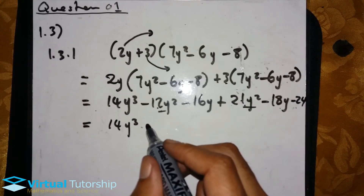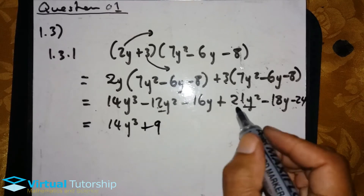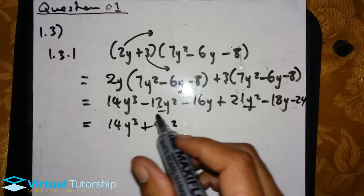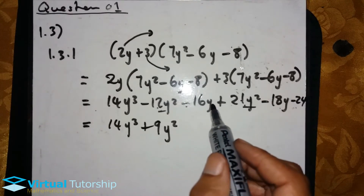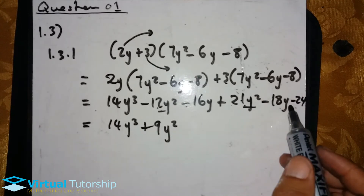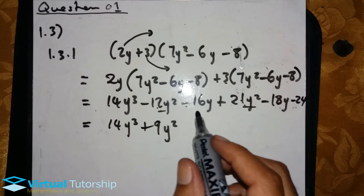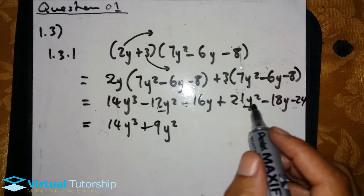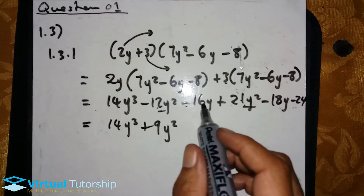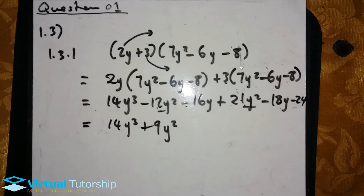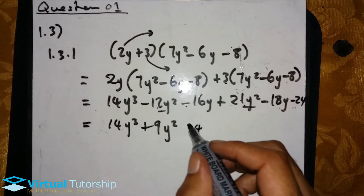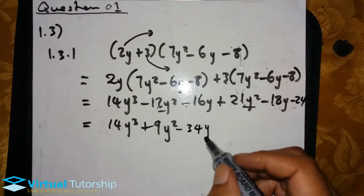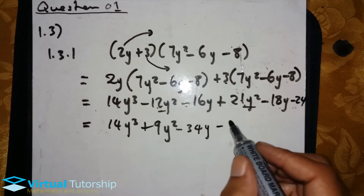Now collecting like terms: 21 minus 12 is positive 9, so 9y squared. Then minus 16y and minus 18y — that's minus 34y. And 24 has no like term.